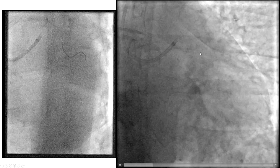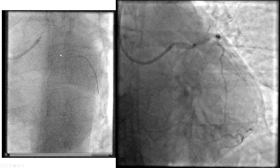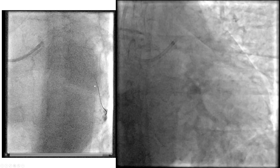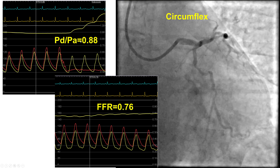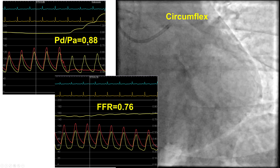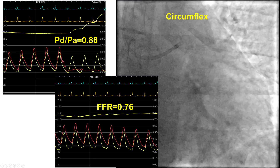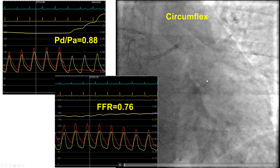This was a very tortuous circumflex and that's why we used one of the newer wires, the Opsens guide wire, that we were able to deliver all the way to the distal circumflex. We then did the resting PDPA that was 0.88, suggesting significant lesion with a cut-off usually used for PDPA of 0.91. To confirm, we did intracoronary adenosine injection and the FFR with adenosine was 0.76, confirming the resting index.